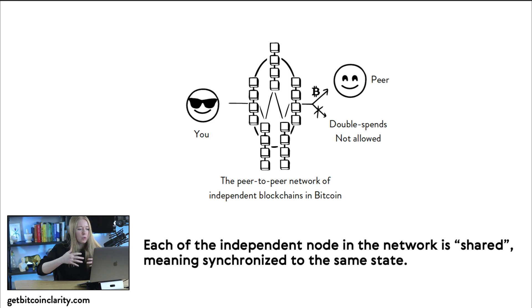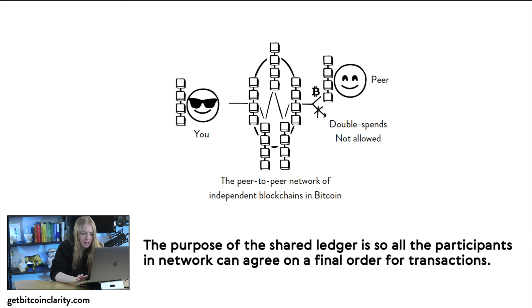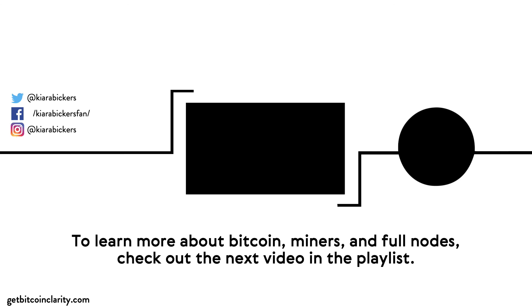Each of the independent full nodes in the network is synchronized to the same state. Because every user in this network can run their own full node and verify their own transactions, the system can be trustless — that will be the subject of another video. The purpose of the shared ledger is so that all participants in the network can agree on the final order of transactions. If you enjoyed this video and want to learn more about Bitcoin, check out the next video in the playlist and subscribe.